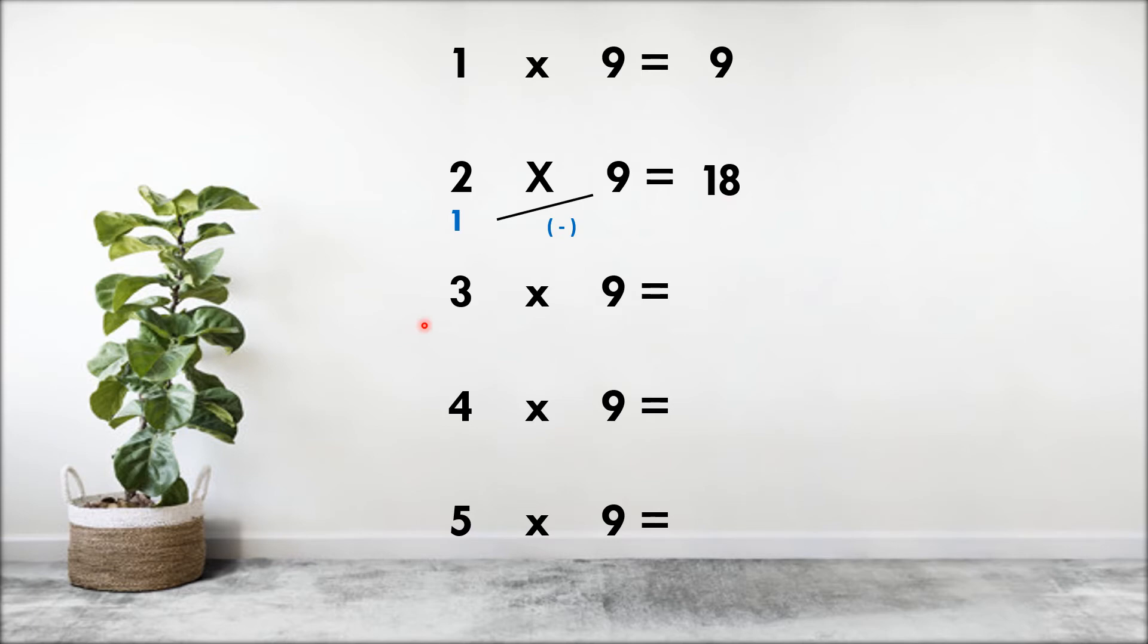We shall see for 3 into 9. Predecessor of 3 is 2, and 9 minus 2 is 7, so 3 times 9 is 27. For 4 into 9, predecessor of 4 is 3, and 9 minus 3 is 6, so 4 times 9 is 36.